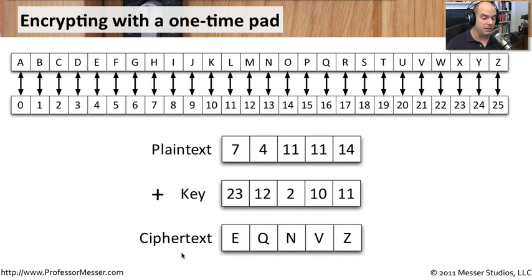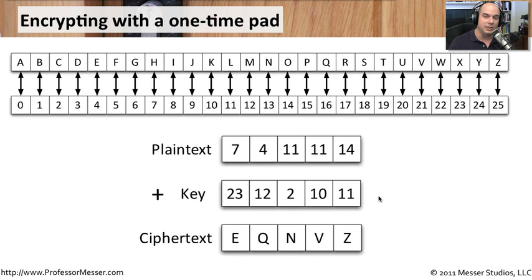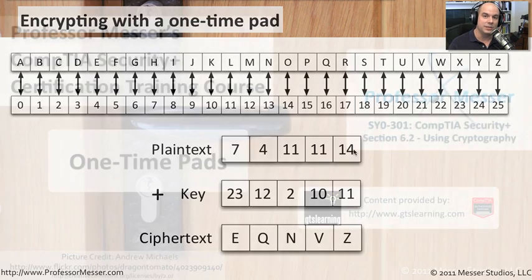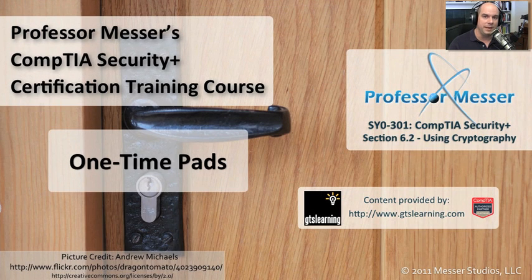Converting those numbers back to letters gives us EQNVZ — that's our encrypted message. On the receiving end, someone with the exact same key will take our message, subtract the numbers to get the plain text numbers, and associate those back with the letters H-E-L-L-O to recover the message 'hello'.